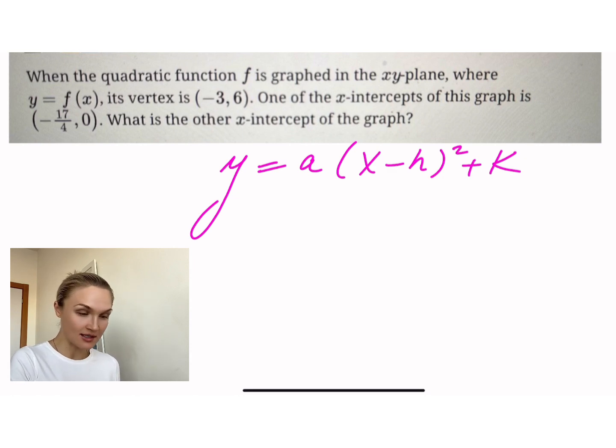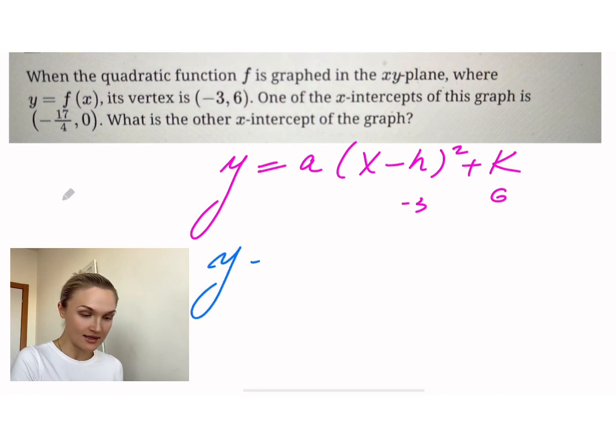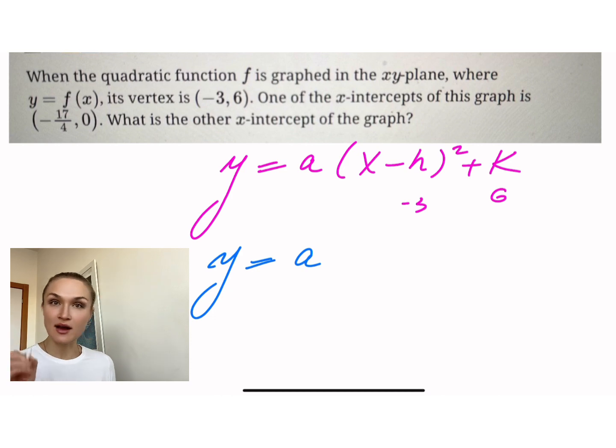And then we know our h and k. Our h is going to be negative three, and our k is going to be six. So we can responsibly write down our equation. Should not forget about your a. We cannot assume that a is one.